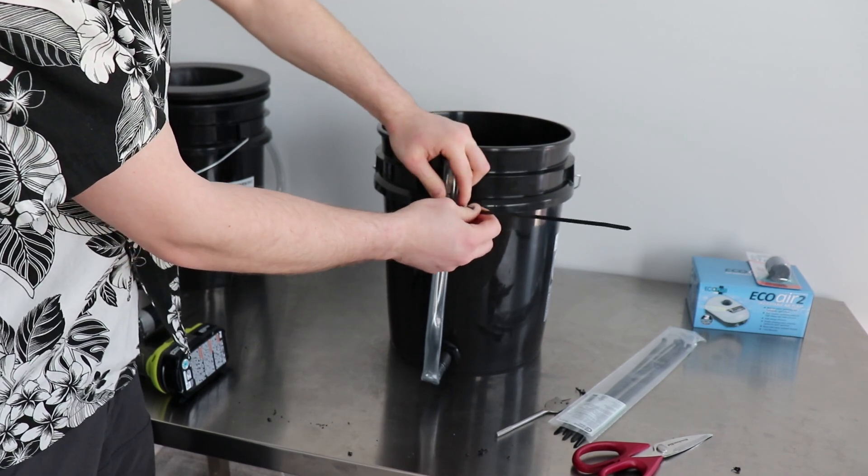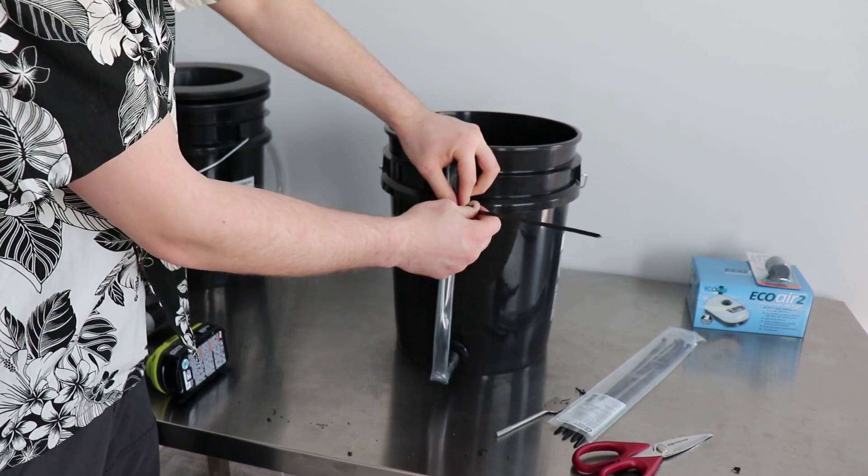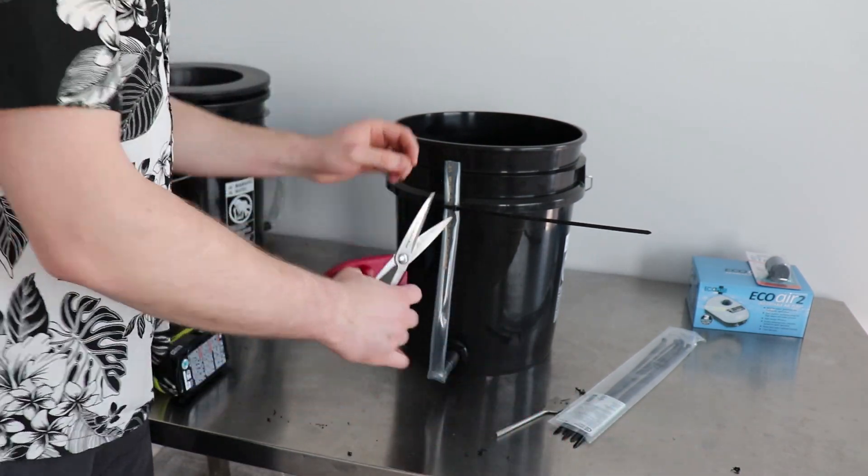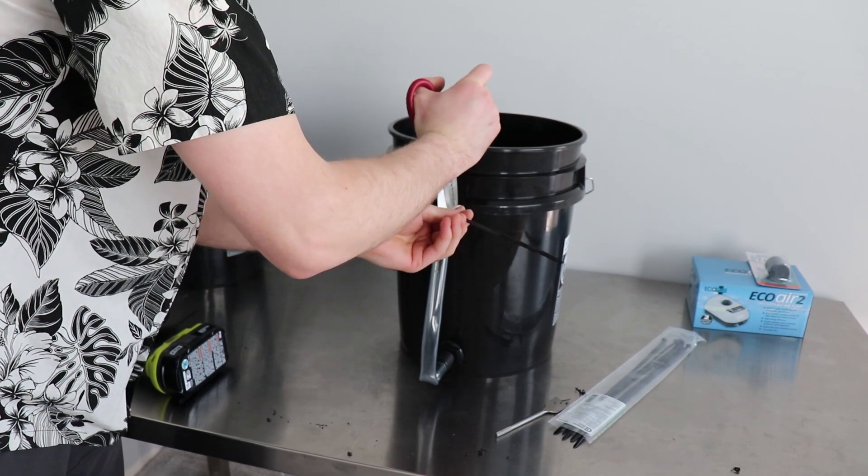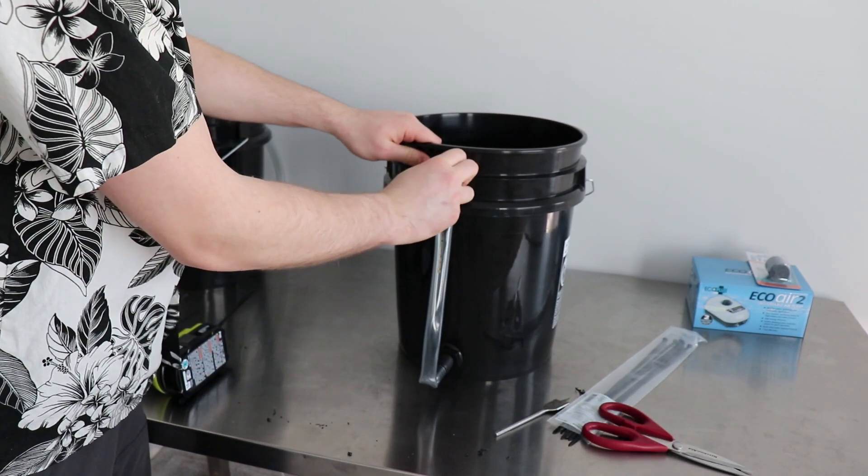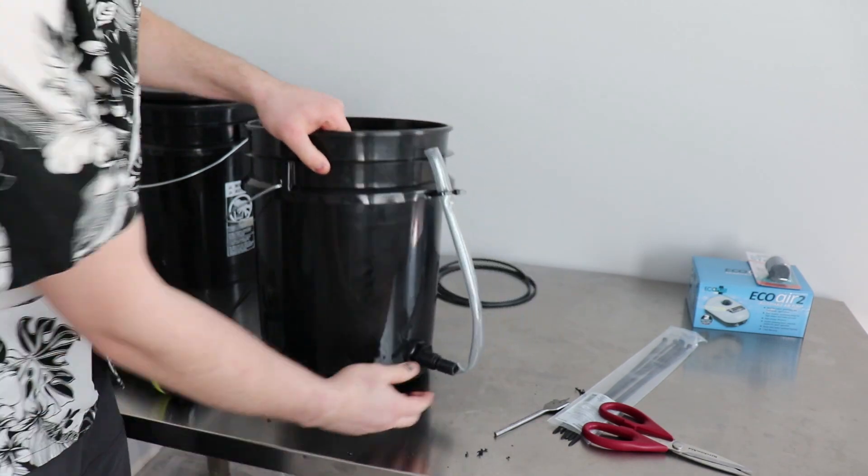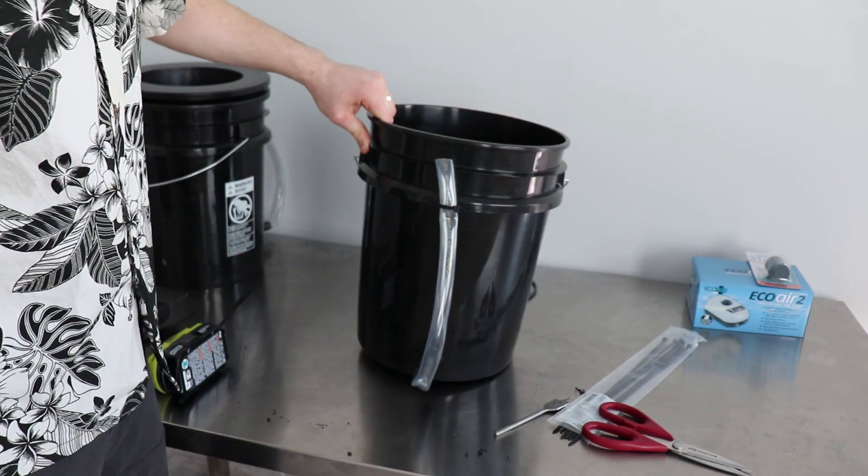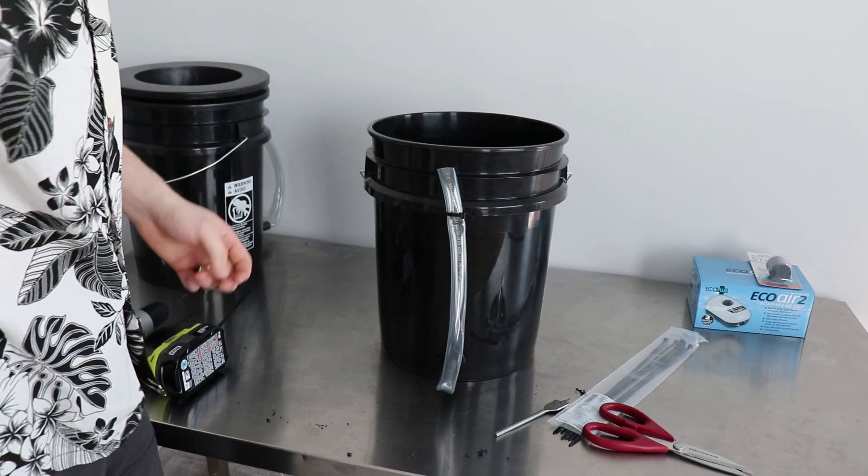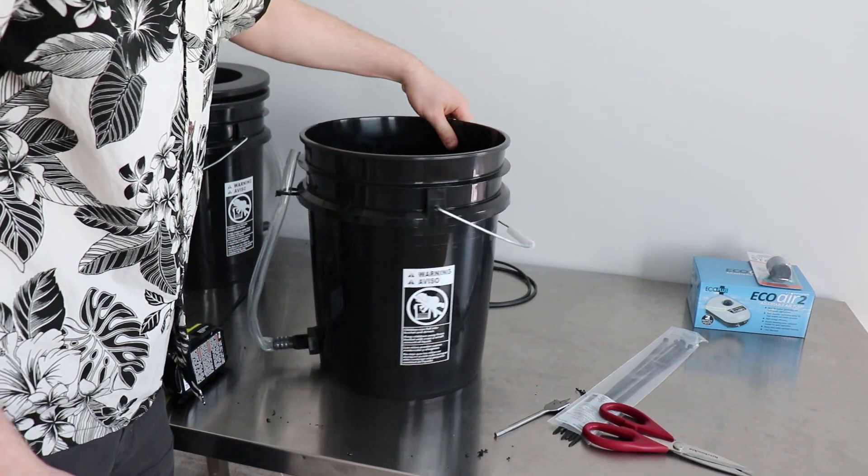Then just snug the zip tie up, just enough so it's holding it. Don't want to put it too tight. Snip this. There we go. So that's the water level indicator. You can use that to also just check the pH. Put some into a cup out of the bucket to water.